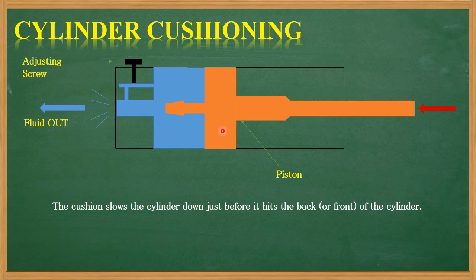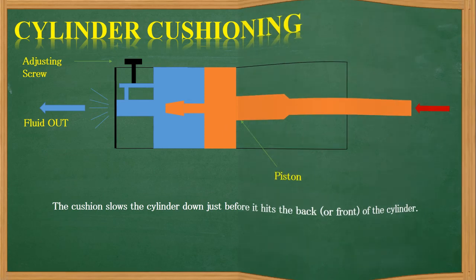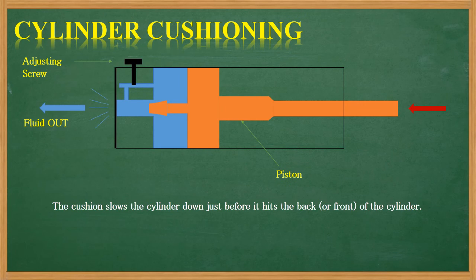Now let's see how cylinder cushioning works. The piston on the right side — when oil comes from that side it moves to the left. As it moves left, oil exits freely from one side. But once that specific cushioning spigot portion enters the bore, fluid faces a restriction in exiting, oil flow reduces, back pressure builds up, and the piston slows down gradually before reaching the cylinder end, preventing impact.